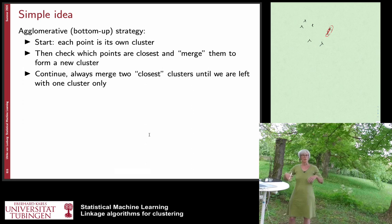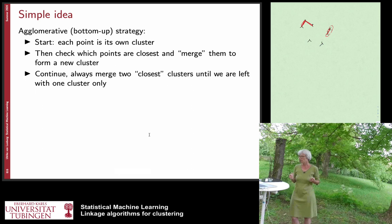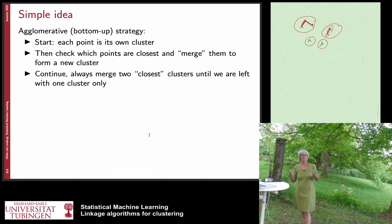Then the algorithm iterates, and in the next iteration checks again which two points or clusters it wants to merge next. So maybe it merges these two points next, and then again checks which is the closest pair. For example, in this particular state the algorithm would have four clusters — this would be one cluster, this is the second one, and each of these data points is its own cluster. It proceeds this way until everything has been merged into one cluster, and then it terminates.